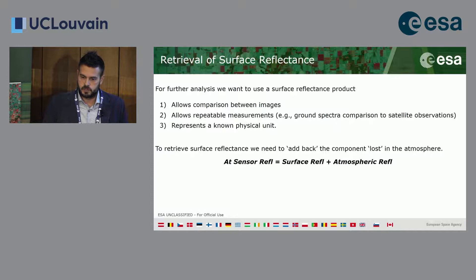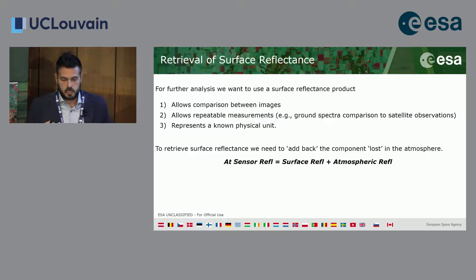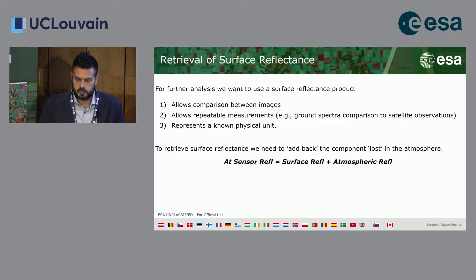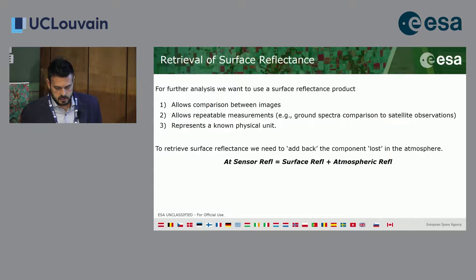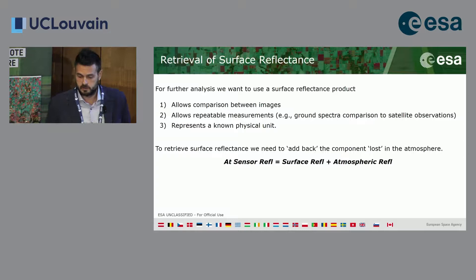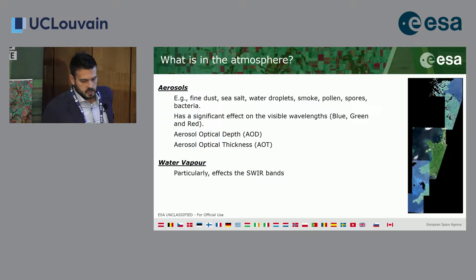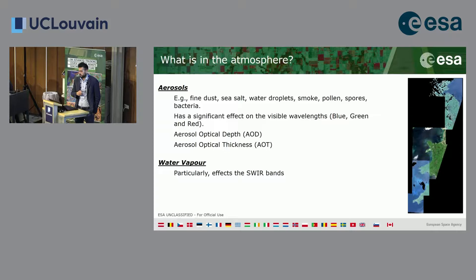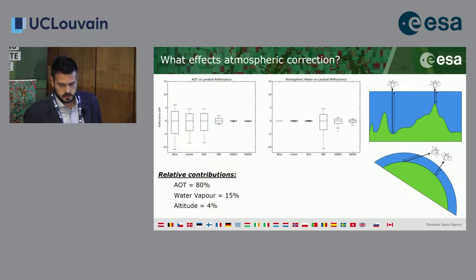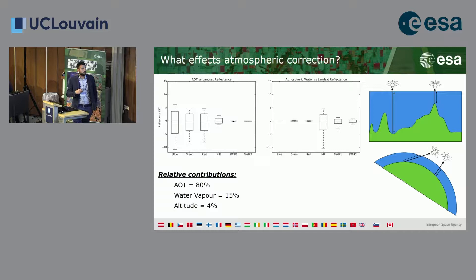We want to obtain surface reflectance because we have a top-of-atmosphere product and need to correct the atmospheric effect in order to compare different images and get the real, repeatable measurement of the pixel — even comparable with in-situ measurements. At-sensor reflectance equals surface reflectance plus atmospheric reflectance. In the atmosphere, aerosol has a significant effect on visible wavelengths, contributing about 80% of the relative correction, while water vapor affects the SWIR bands at about 15%. Altitude must also be accounted for.